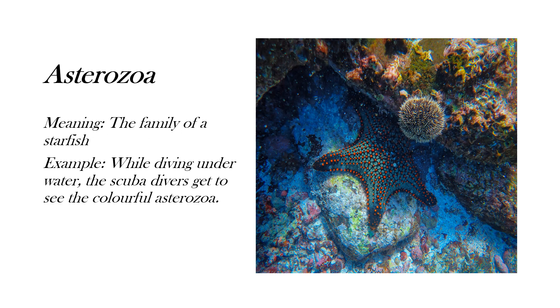For the fifth word, I have taken asterozoa. It means the family of a starfish. In the picture, you can see a starfish hiding under the rock. So the example is, while diving underwater, the scuba divers get to see the colorful asterozoa. So if you want to see this asterozoa and other colorful marine lives, you can try going for a scuba diving sometimes.